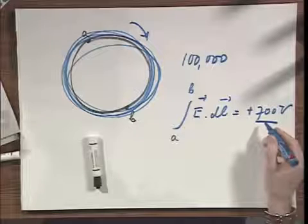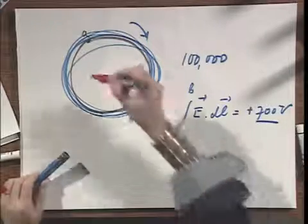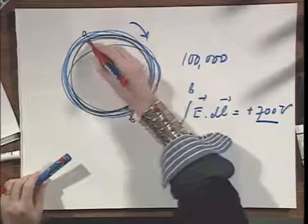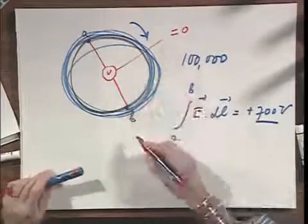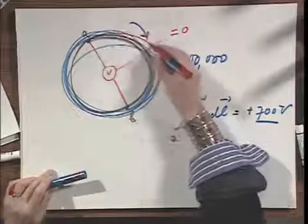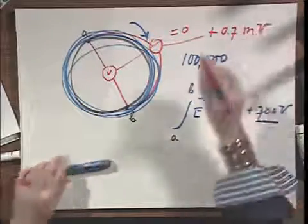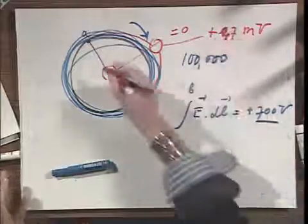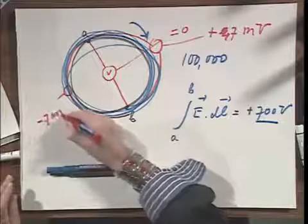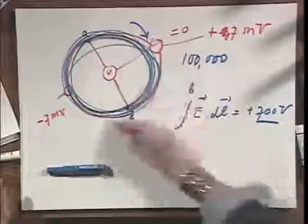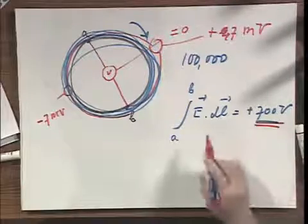How real is this 700 volts? Can you actually measure these voltages? The answer is yes. In my previous example, if I had a wire and a voltmeter straight through the middle, this voltmeter would read zero. If I had a voltmeter on this side, it would read plus seven millivolts. If I put a voltmeter on the other side, it would read minus seven millivolts. And if I put a voltmeter in the line with 100,000 windings, that voltmeter would read plus 700 volts. That's the whole idea behind transformers.